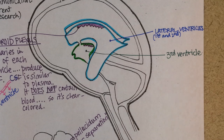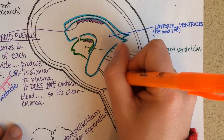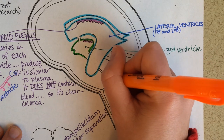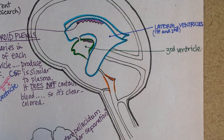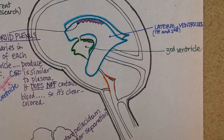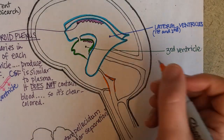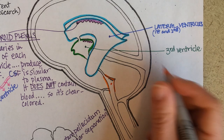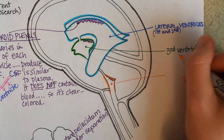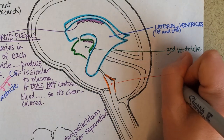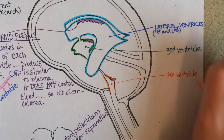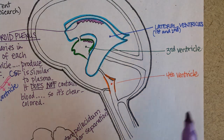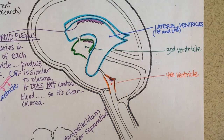We'll use orange for — what number do you think this one is? The fourth ventricle, and it's actually pretty big — bigger than it looks in this picture. So again, leave a little bit of space because we're going to write something here. This is the fourth ventricle, and yet again there's the choroid plexus hanging from the roof of it.